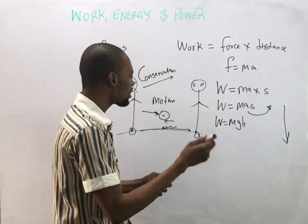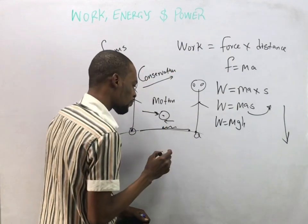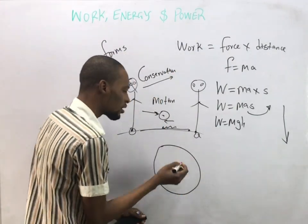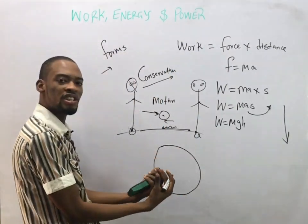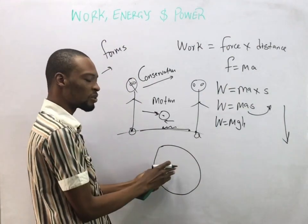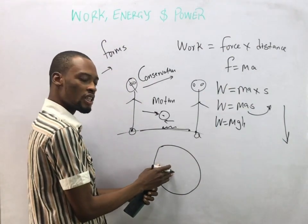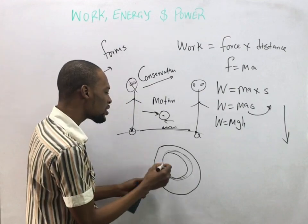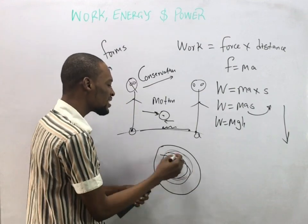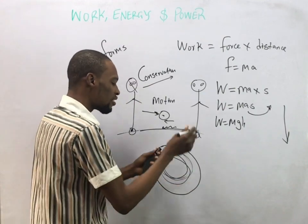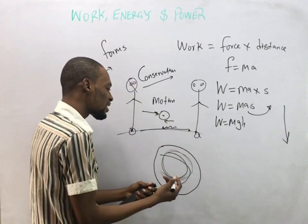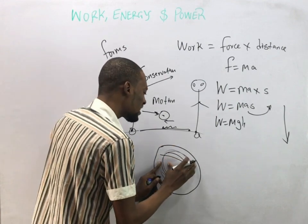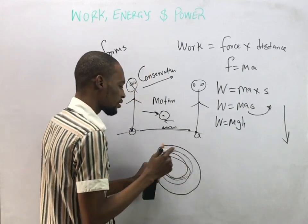The law of conservation of energy states that in an isolated or closed system — a system in which nothing is going out and nothing is coming in — the total energy remains the same. Although within the system energy can change from one form to another, from electrical to mechanical and so on, the total energy is conserved.